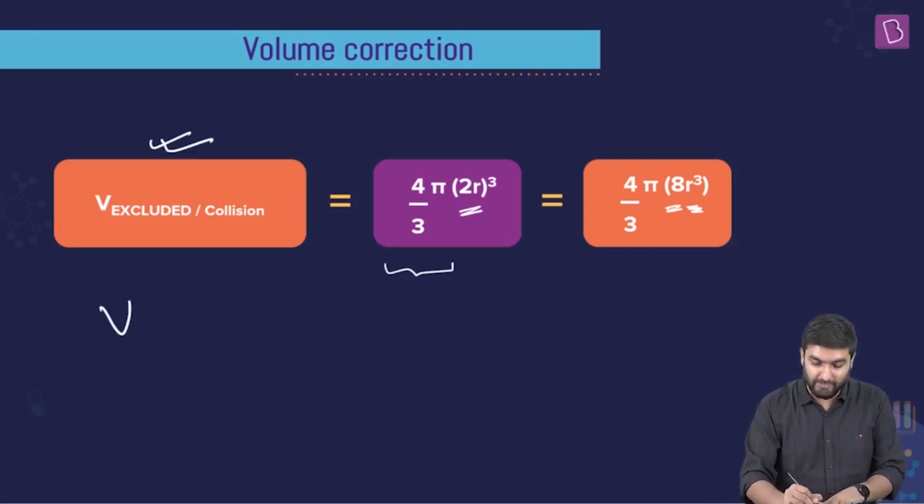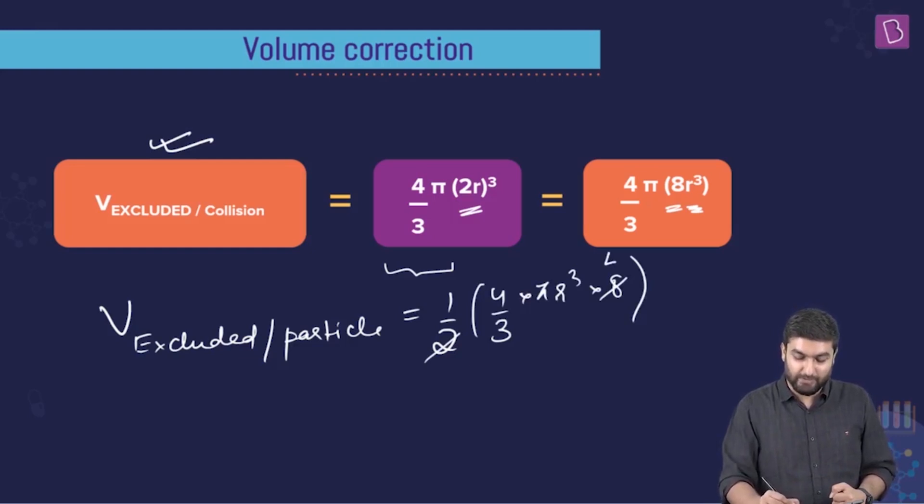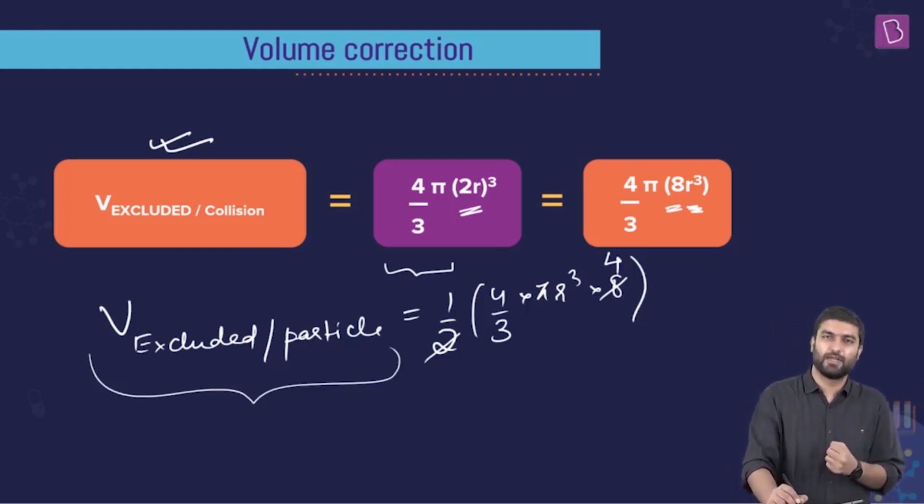On a similar manner, what we can also say is that the volume excluded per particle, because there were two particles involved and we did the calculation for both of them. But turned out we were taking things, we are counting things twice. So volume excluded per particle turns out to be half of this. That is basically 4 by 3 into pi R³ into 8. I'm writing this 8 separately because this is what this begins to. Now the point is over here, this is the volume excluded per particle. Now what if you have one mole of the sample? What if you had NA particles? What would you do? You would multiply this entire expression with NA, Avogadro's number. Exactly.